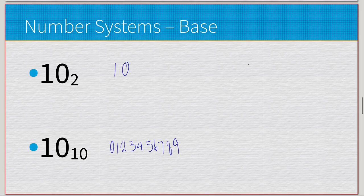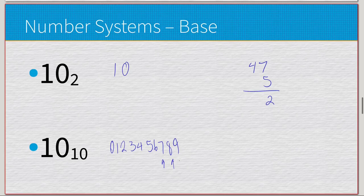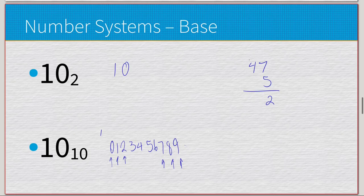Let's go back to the example: 47 plus 5. We have 7 here. We count up 1, 2 — and if we go past, we would overflow. So we wrap around back to 0 and know that we have a bit to carry over, since we overflowed past our maximum value. That would be 3, 4, and then 5 — so we end at 2, that's the value we get, and then we make sure to have that carry bit. So 4 plus 1 gives 52.